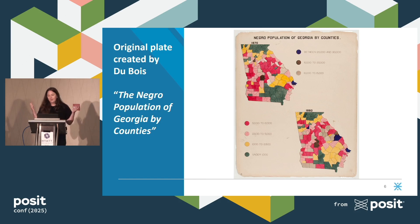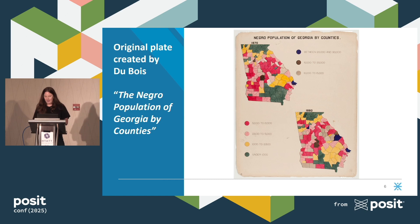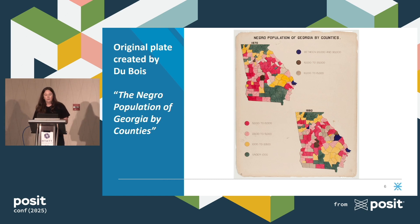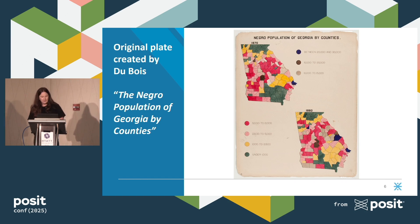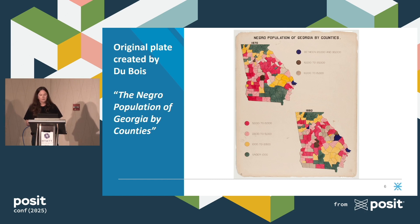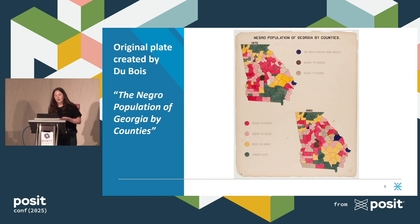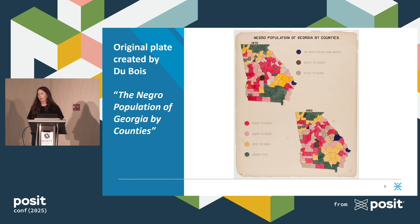This was the visual that we decided to recreate. I do want to quickly highlight that this was created using watercolors, which gives the maps in those counties that almost shading-like effect. Also, the lettering and numbering here is extremely detailed — Du Bois and his team accounted for the height and density of each letter and number you see here.